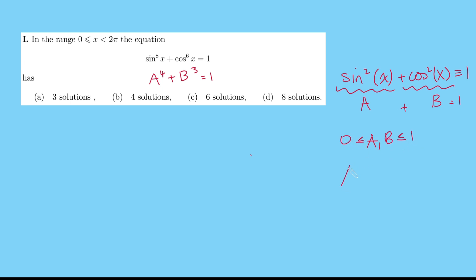And now here's the thing. When we raise a number to the power of 4 that's between 0 and 1, that's going to be less than A. Similarly, B cubed is going to be less than B. And therefore, A to the 4 plus B cubed must be less than A plus B, which is 1.